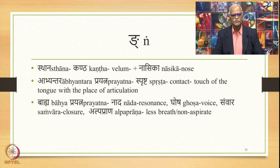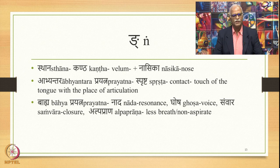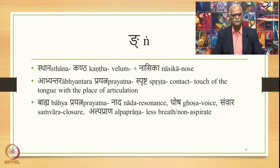The last sound in this class is ṅa. The place of articulation is kantha plus nasika (the nose). The abhyantara prayatna is sprashta — touch of the tongue with the place of articulation. The bahya prayatna is nada, ghosha, samvara, and also alpaprana — less breath; this sound is called non-aspirate. Remember, this sound is to be pronounced as ṅ, as you pronounce it in 'aṅg': ṅ.